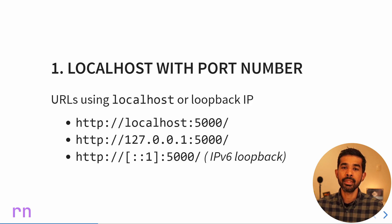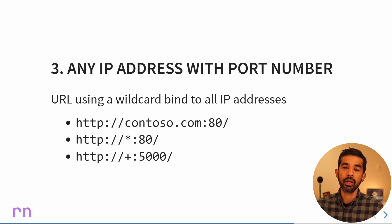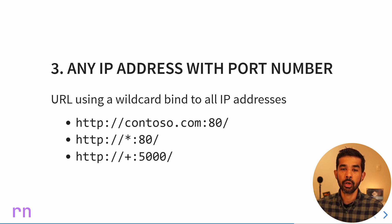You can also specify an IPv6 address, represented in square brackets with a colon and a 1. The square brackets are required for IPv6 addresses because the IPv6 address itself can contain colons, so this separates the port from the actual address. The second format has a specific IP address followed by a port, either IPv4 or IPv6. The third format uses a wildcard pattern — anything that's not a localhost or an IP address is considered a wildcard, such as star, plus, or even contoso.com.